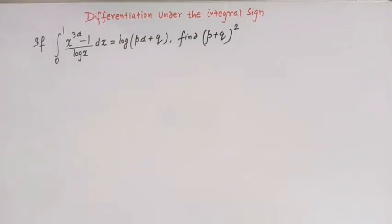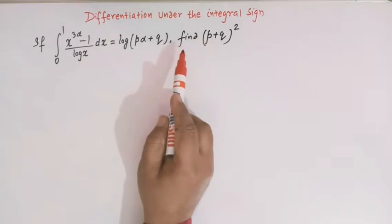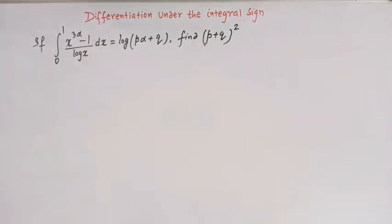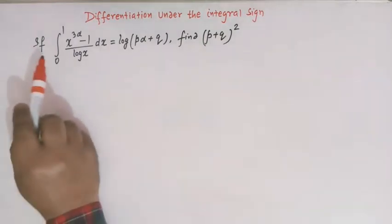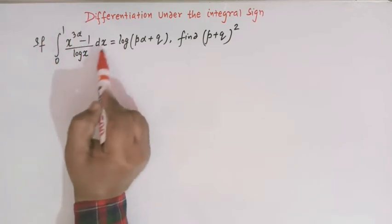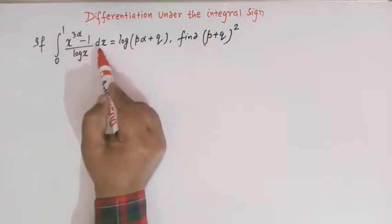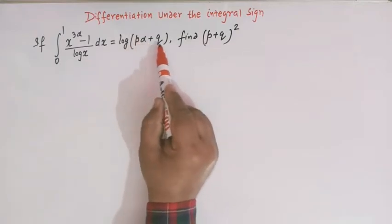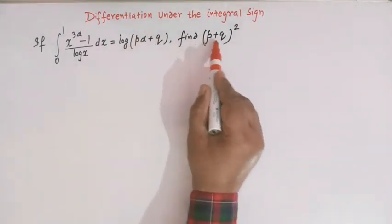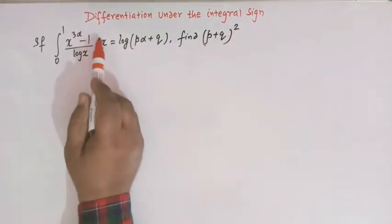Hello viewers, in today's class we are going to discuss an important integral from the topic differentiation under the integral sign. We have to solve this problem using the famous Leibniz rule, which says how to differentiate a function under the integral sign. We are given the value of this integral: from 0 to 1, x raised to 3α minus 1 over log x dx, equal to log of (pα + q), and we have to find the value of (p + q) squared.